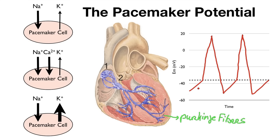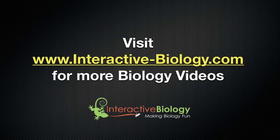So what ends up happening is we have this automatic signal that's generated constantly, resulting in the contraction of the heart. This causes the heart to beat — it's really that straightforward. The main idea is that the cells in the SA node have a significantly higher conductance for sodium, so it continuously depolarizes, causing that impulse that causes the heart to beat.